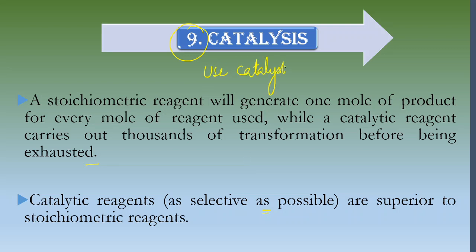Stoichiometric reagent means: let's say R is changing to P — R is your reactant and P is your product. As per the stoichiometry and molar ratios, you select the reagent that will generate one mole of product for every one mole of reagent used. But when you use a catalyst along with it, it undergoes thousands of transformations, speeds up the reaction, and is selective — it will target that specific position only, so addition, elimination, or substitution will take place selectively.